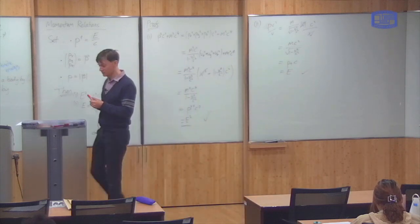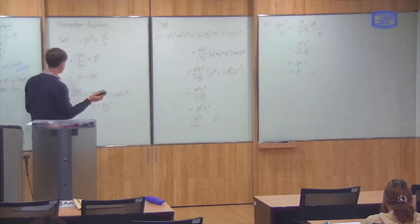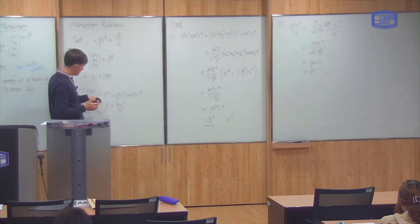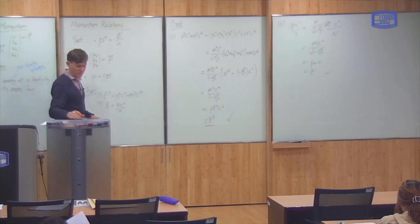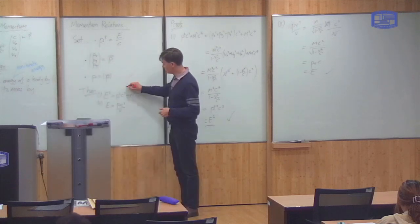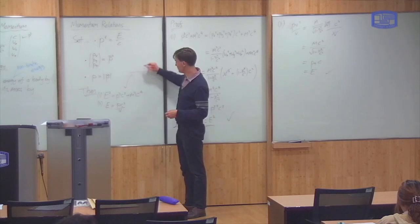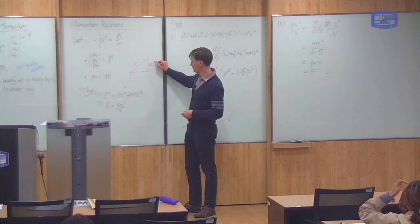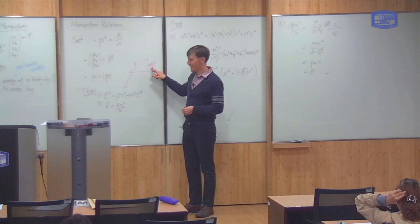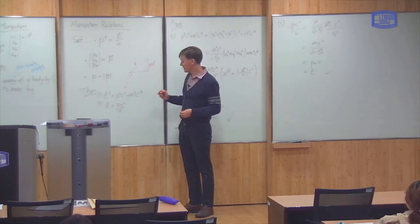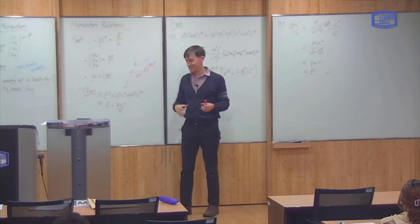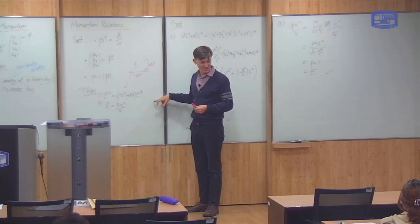So that one works too. So we've proved that these two equations are true for any observer. Note that this one has a nice interpretation in terms of Pythagoras theorem, right? So you can interpret this as representing a triangle where the hypotenuse of the triangle is the energy of the particle. One side of the triangle is the mass or m c squared. So this is called the mass energy, the energy associated with the mass of the particle. And then the other one is p c, associated with the momentum. So if you have a visual kind of memory, then you can remember that picture instead of that equation if you want.